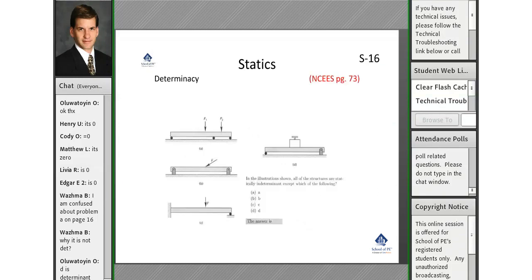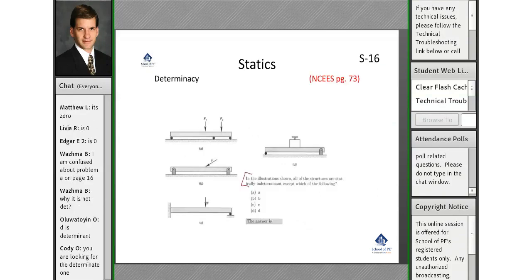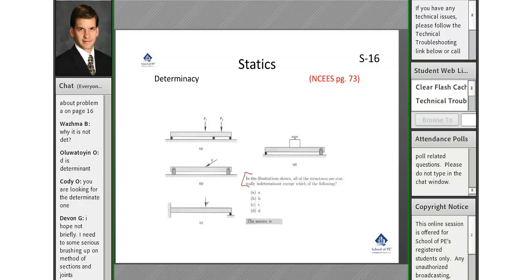D is determinate. This is a pesky trick — read the problem carefully. It's kind of a double negative: all are indeterminate except which one? They could have asked which one is determinate, but instead they ask all are indeterminate except — it's basically a double negative. So D is determinate, which makes it the correct answer: all of the others are indeterminate except D. They're playing with the language there.